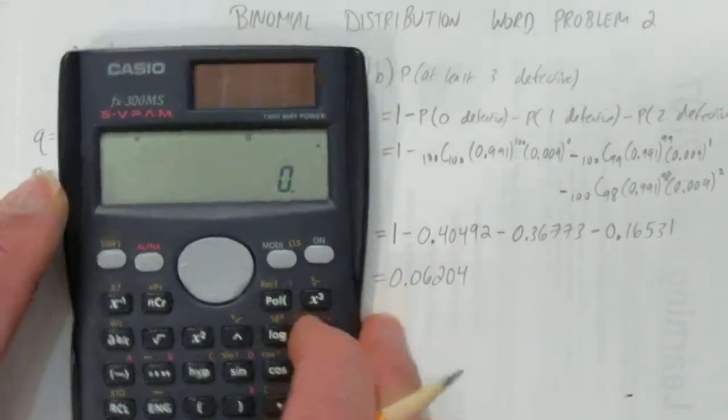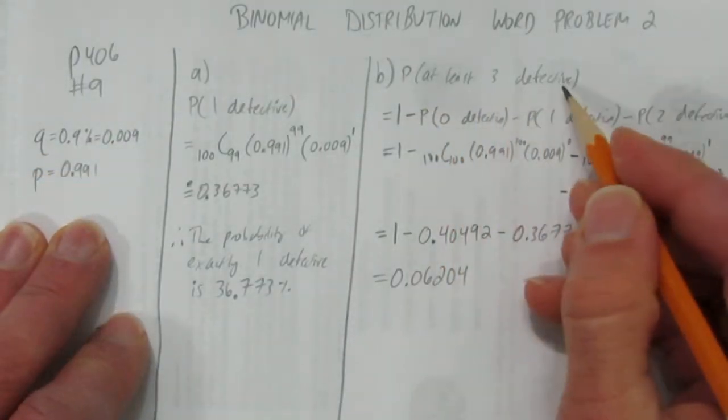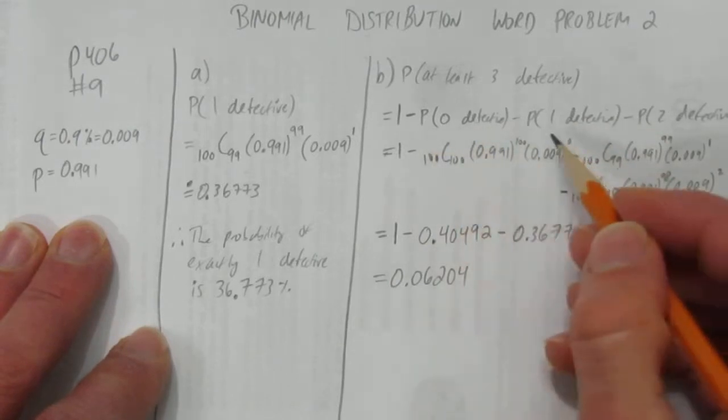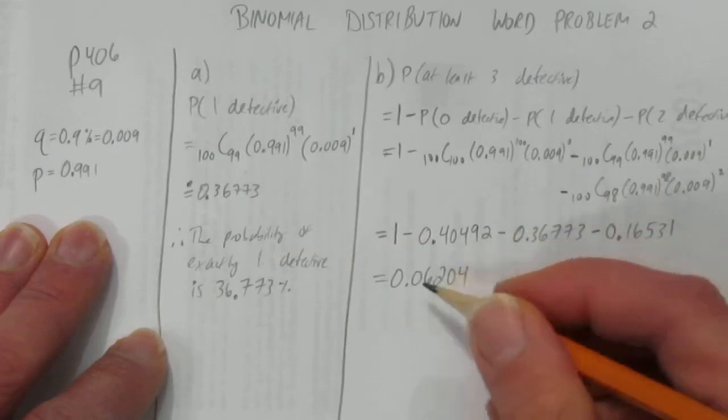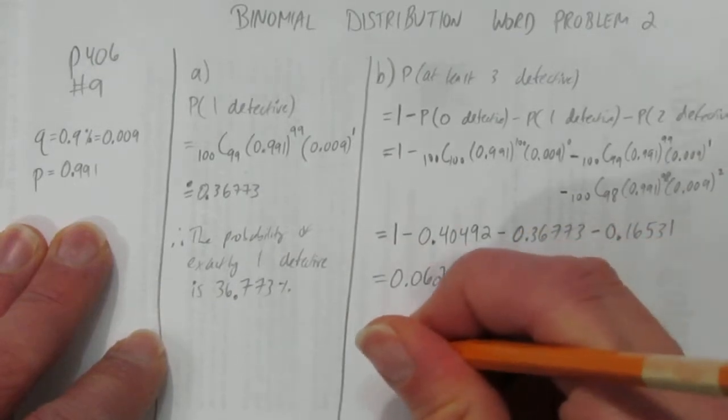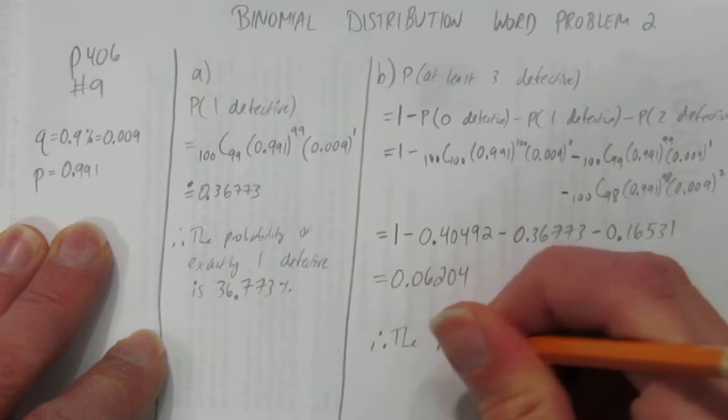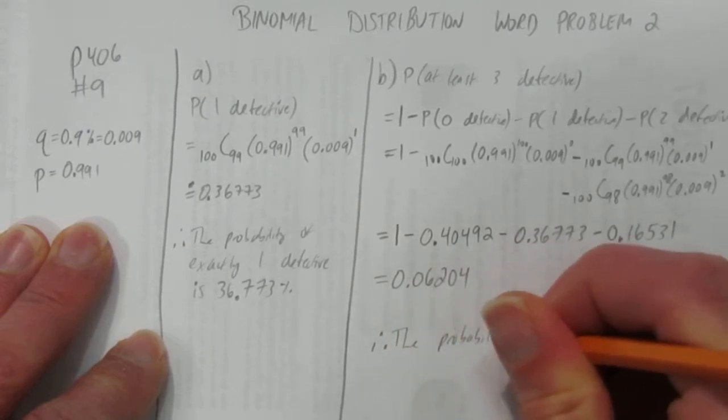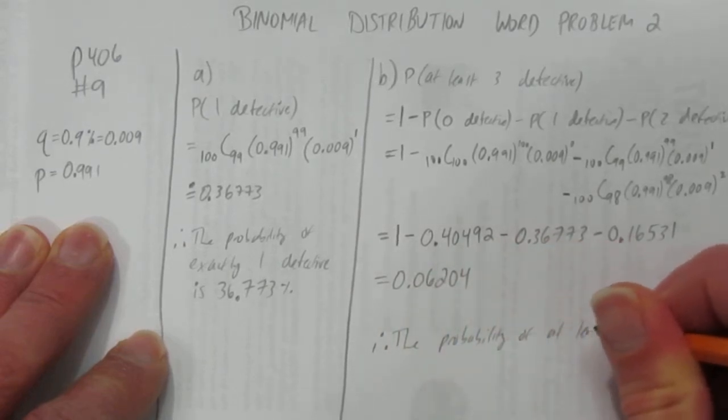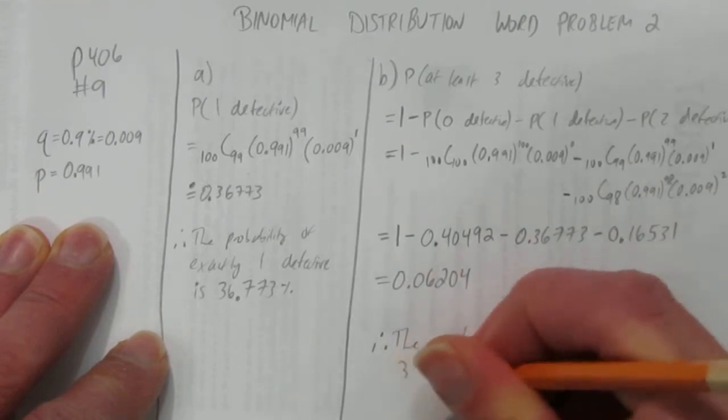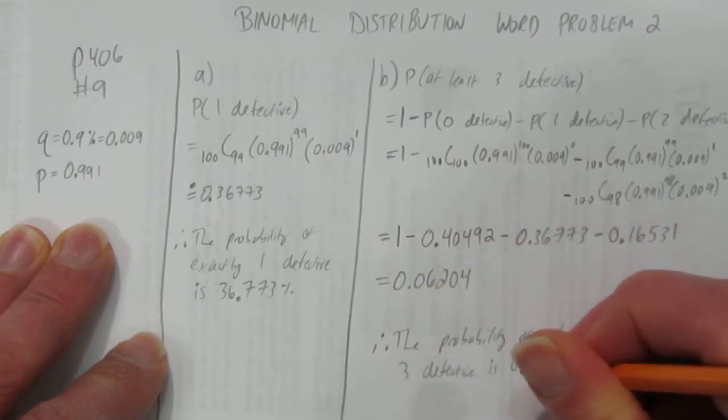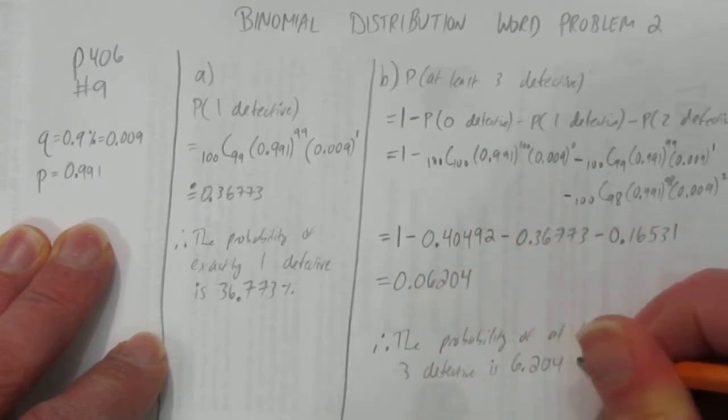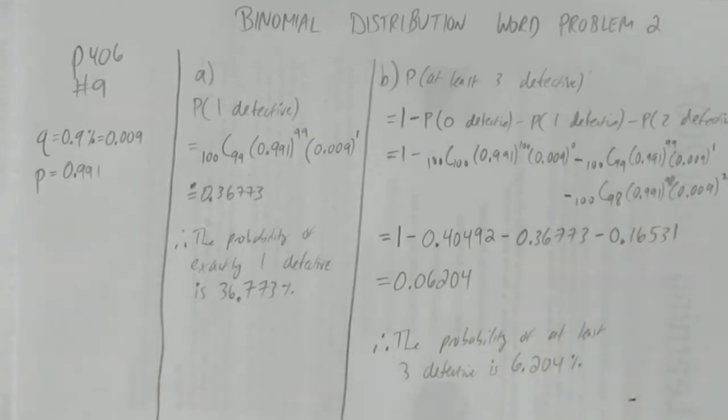So, we've got it. It wasn't that hard, in fact. To calculate the probability of at least 3 defective, we just subtracted 0 defective, 1 defective, and 2 defective from 100%. And we got approximately, let's write a therefore statement because it's a word problem. The probability of at least 3 defective is, move the decimal over 2 to make it a percentage, 6.204%. So, that's an example of how to use binomial distribution in a word problem.